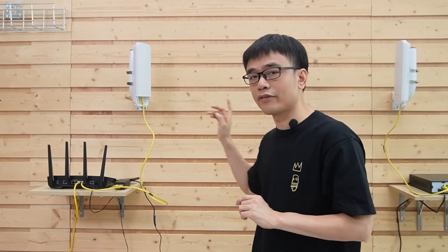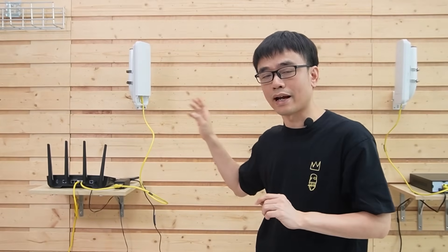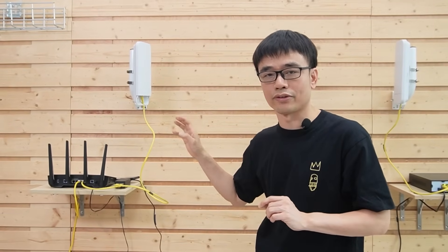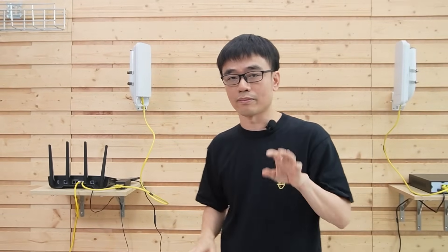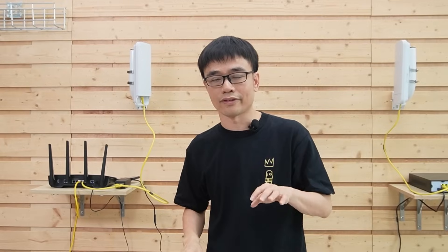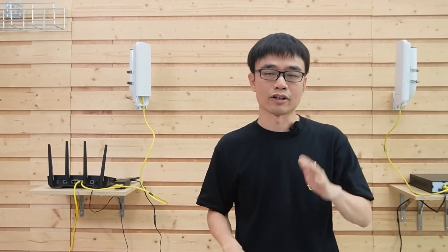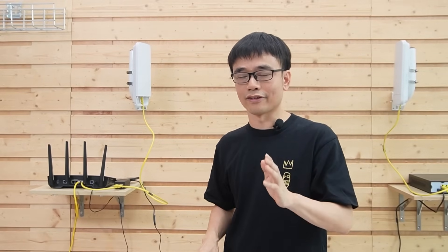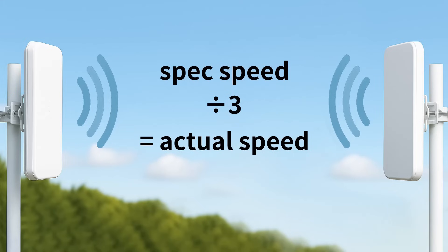For example, if the ideal result from these wireless bridges is 300 Mbps, divide 300 by 3 and you get 100 Mbps. That is the safe bandwidth figure to use in a practical setup.